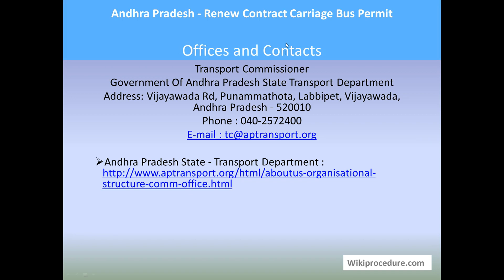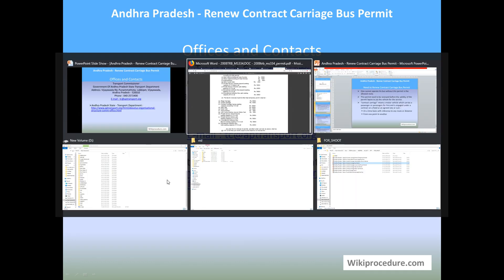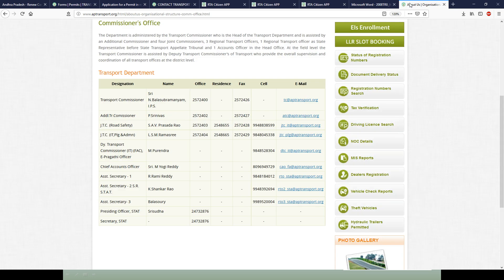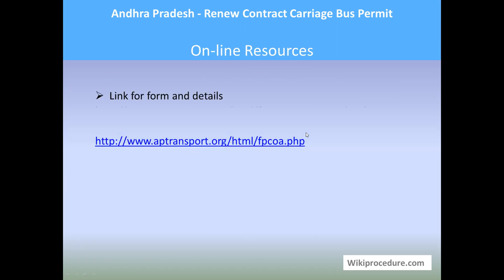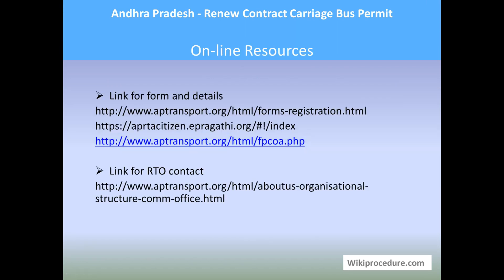Offices and contacts: Transport Commissioner, Government of Andhra Pradesh, State Transport Department, Vijayawada. Phone number and email ID are provided for personal verification of certain details. The contact link provided on the page will help you reach the official contact page of the transport department, from where you can identify the officer responsible for your area or zone, along with their mobile number and email ID for clarification of your doubts.